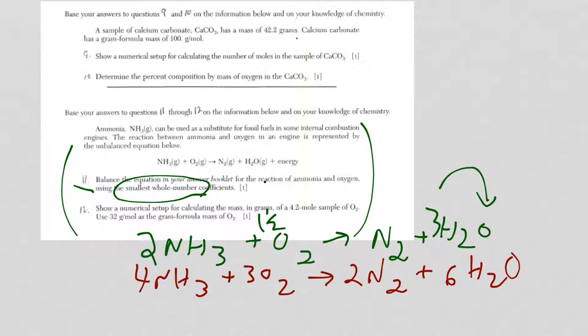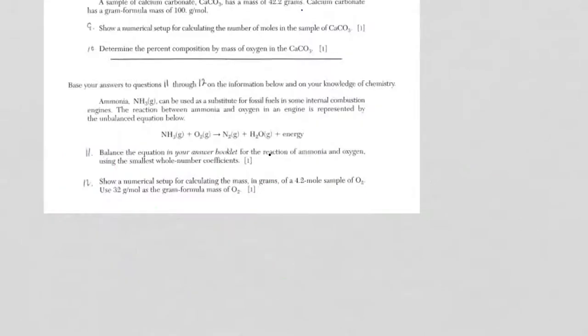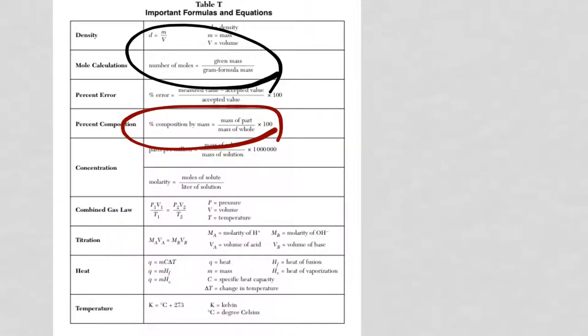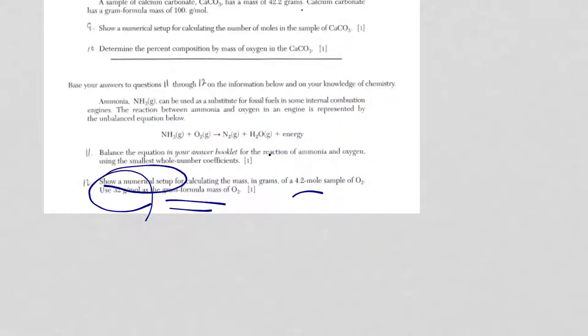Finally, for number 12, they're asking for a numerical setup again. Calculating mass in grams for 4.2 moles of sample O2 and 32 for the grams per mole of the gram formula mass. Once again, reference table T. Notice it's repeating. We have moles is equal to mass over gram formula mass.